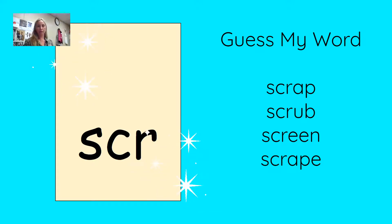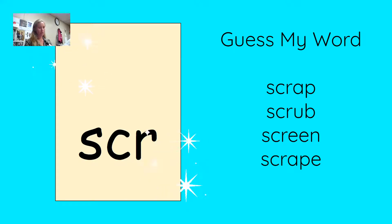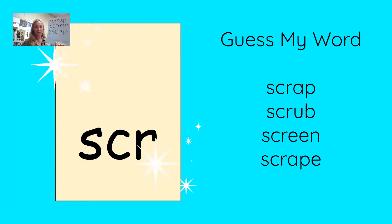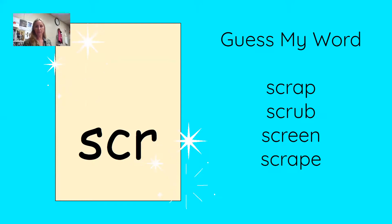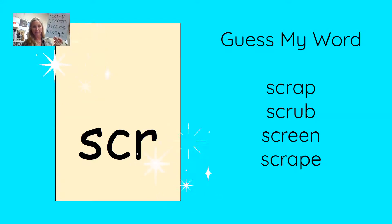Here is clue number three — the vowel pattern, see my hand shape, is vowel-consonant-silent e. Look at the words: can you find the word with that pattern? I see that 'scrape' has vowel-consonant-silent e. And here's the last clue: I don't want you to fall off your bike and do this to your knee — you might scrape your knee. If you figured out my word was 'scrape,' you read my mind! Nice job.